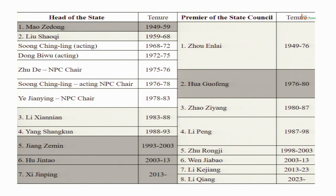The position of the president over time has changed. Mao Zedong was the first head of state and was called chairman — in English translation, the term chairman was used. Mao Zedong was chairman from 1949 to 1959, after which he was succeeded by Liu Shaoqi. Mao remained the leader but Liu Shaoqi became the head of state.